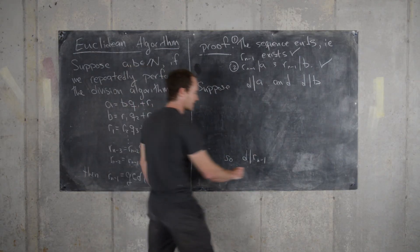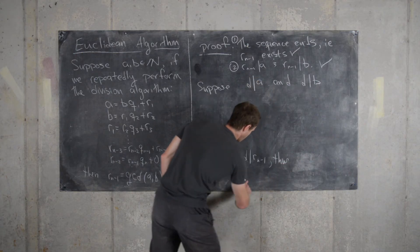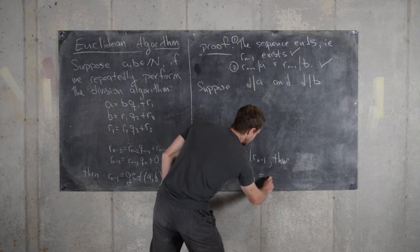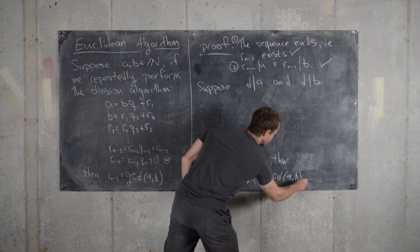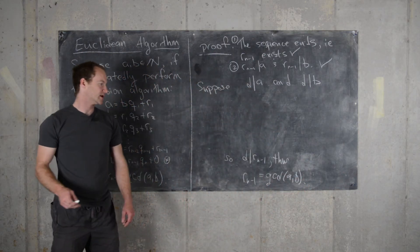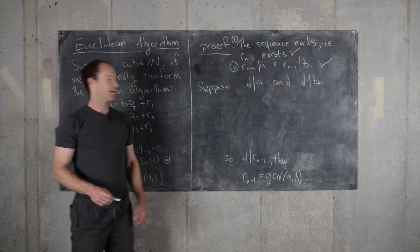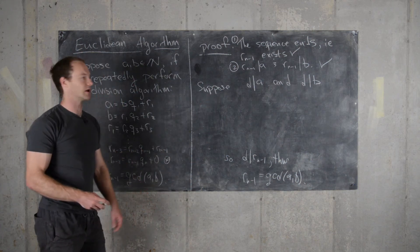Which means, thus, R N minus 1 equals the GCD of A and B. So if we have another common divisor, then it must divide the greatest common divisor. So now we just have to fill in the middle.